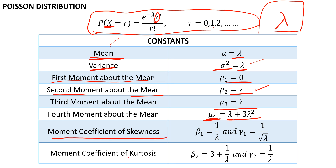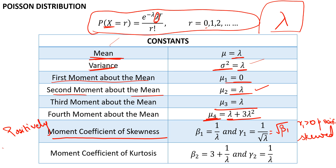Next is the moment coefficient of skewness. Beta 1 is simply equal to 1 over lambda, and gamma 1 is equal to the square root of beta 1, so that is 1 upon the square root of lambda. Now if gamma 1 is greater than 0, it is a positively skewed distribution. Since gamma 1 is always equal to 1 upon the square root of lambda, there is always a positive sign, so this distribution is always positively skewed irrespective of what variable x we are talking about. Poisson distribution is always positively skewed.